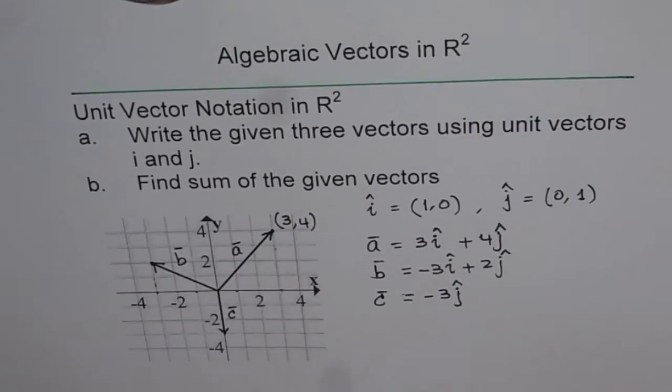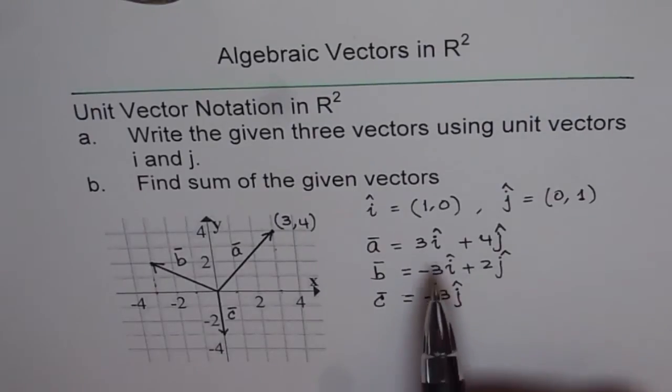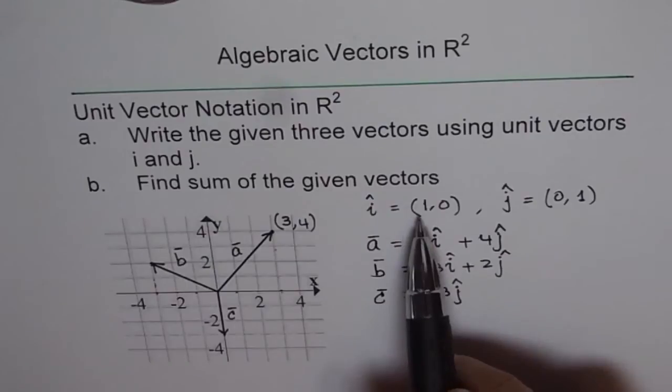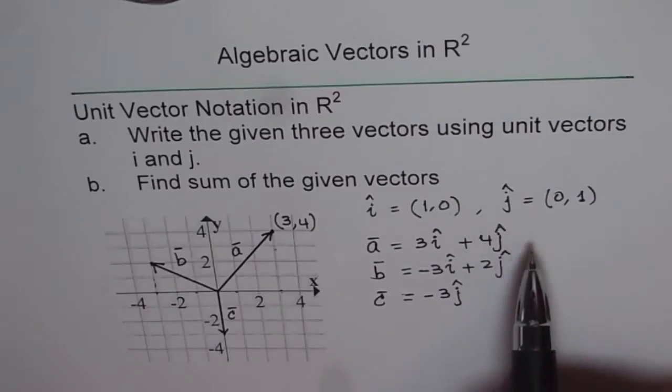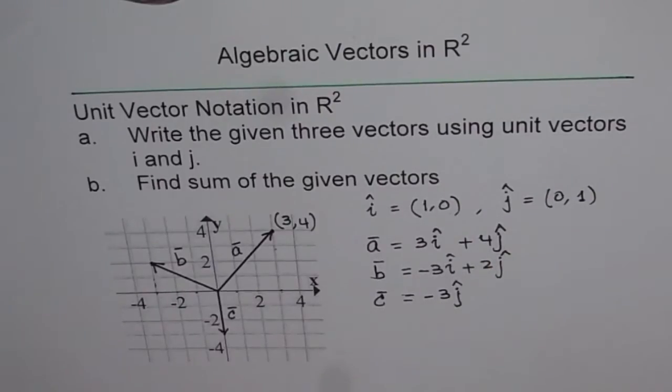So first part was to write these vectors using unit vectors notation. I think you understand now. i is a unit vector along x-axis and can be written as (1, 0). j is a unit vector along y-axis and can be written as (0, 1). And with their linear combinations, we can write any vector in 2D.